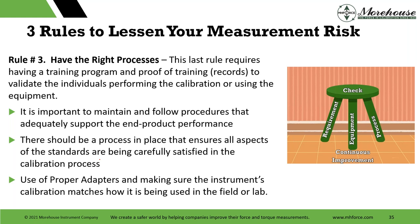Rule three: have the right process. This is about training records. ISO is very prescriptive in this, to validate the individuals performing the calibration or using equipment. I like good gauge R&R testing; I like blind studies; I like a lot of different things for training to see if there is a statistical difference between technicians. I also love the book Checklist Manifesto — if you have not read it, that's one of two books I'd recommend from this session.